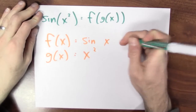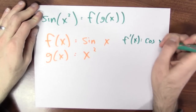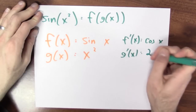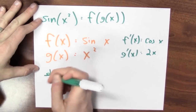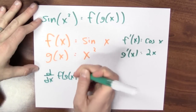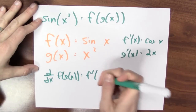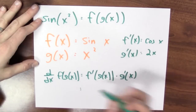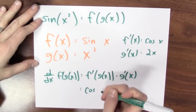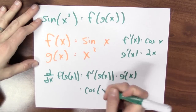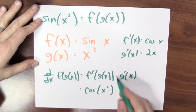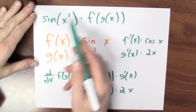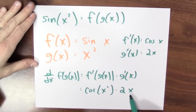I differentiate f, and the derivative of f is cosine x, since the derivative of sine is cosine. The derivative of g is just 2x. So to differentiate the composition of f and g, by the chain rule it's f prime of g of x times g prime of x. In this case, f prime is cosine, so it's cosine of g of x, which is x squared, times the derivative of g, which is 2x. So the derivative of sine of x squared with respect to x is cosine of x squared times 2x.